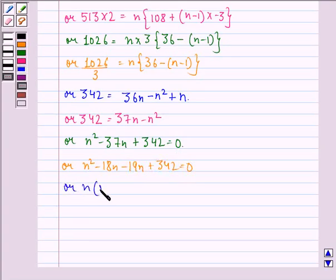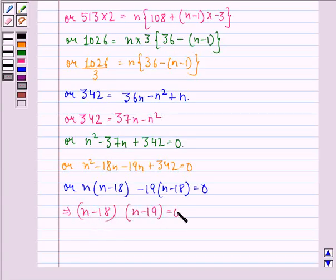Or N into N minus 18 minus 19 into N minus 18 equals 0. This implies that N minus 18 into N minus 19 equals 0. So, this implies N equals 18 or 19.